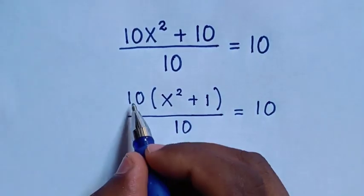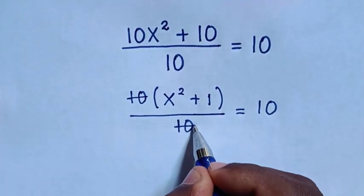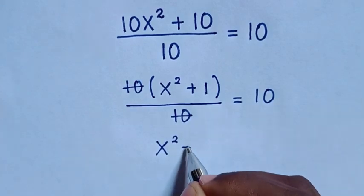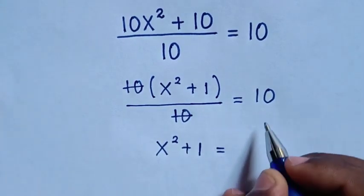Then in next step, we simplify this 10, we cancel this 10, so it will be inside the bracket x² plus 1 is equal to 10.